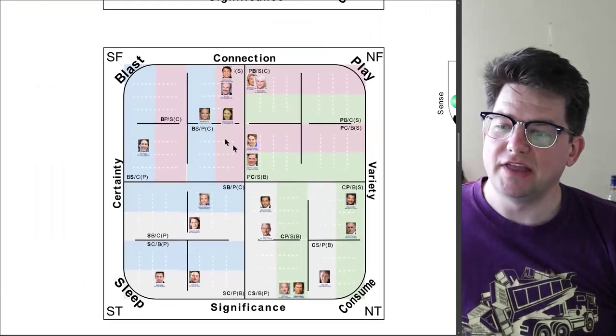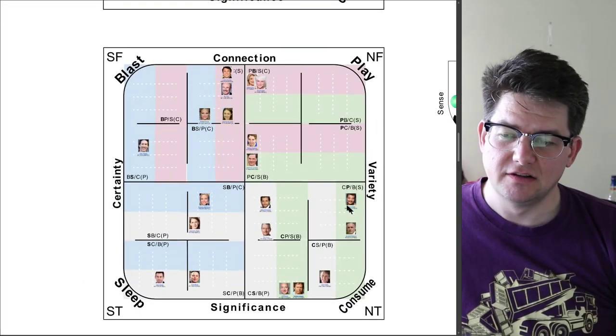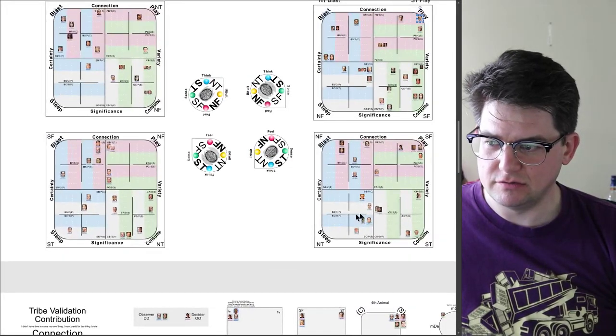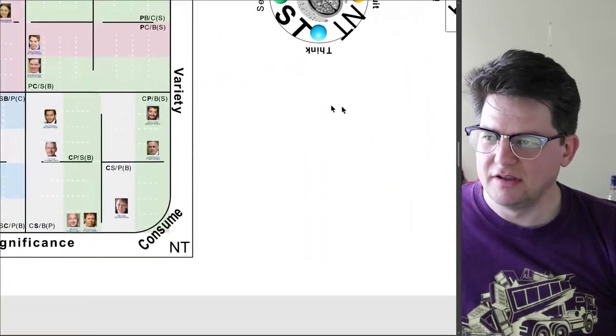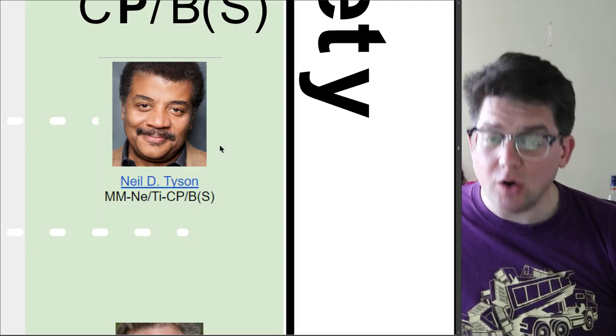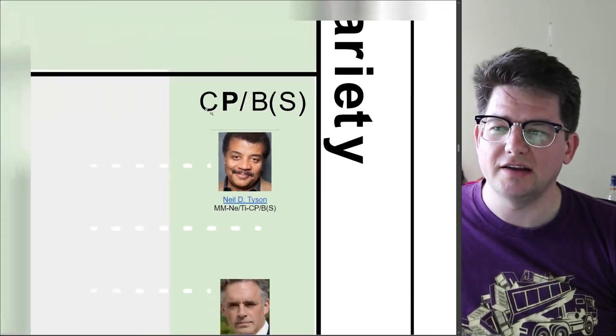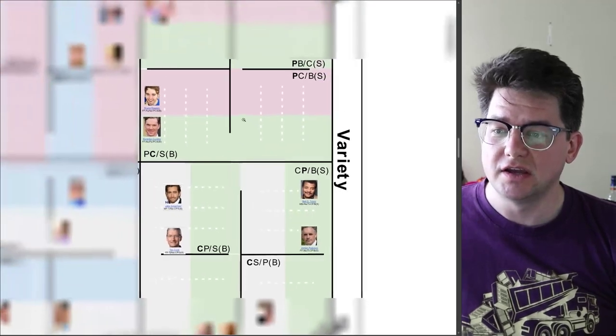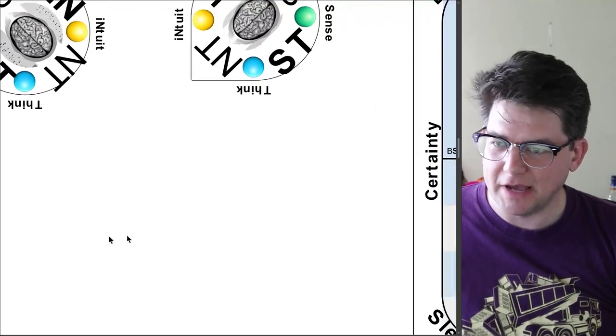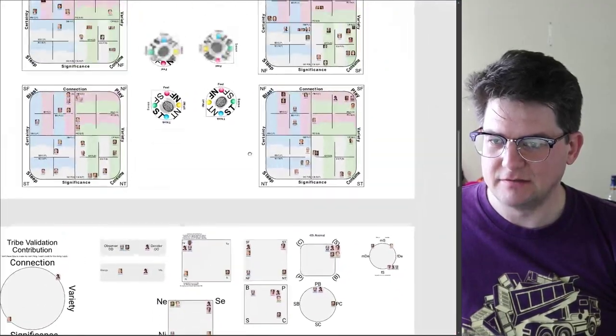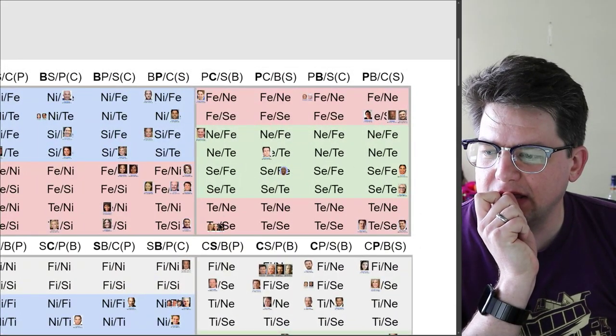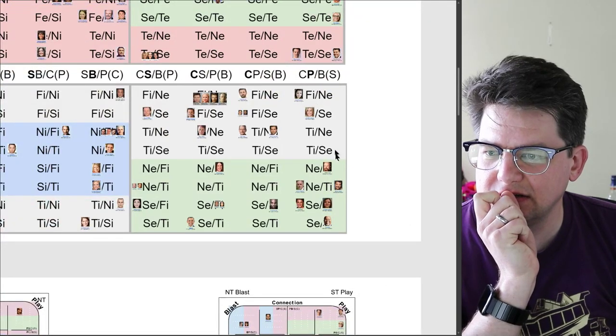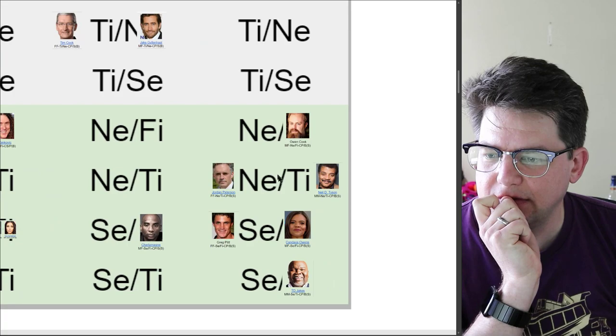Right? But they still have the same parts, which is fascinating. So they're actually more similar to one another than they would be to like TD Jakes. Right? Compare TD Jakes to Neil deGrasse Tyson. So different! So different! Why do they feel so different, even though they're both consume, play, blast, sleep, double masculine? Let me just let me show these people up here. Consume, play, blast, that'd be here. Consume, play, blast, double masculine. Right. So here they are.